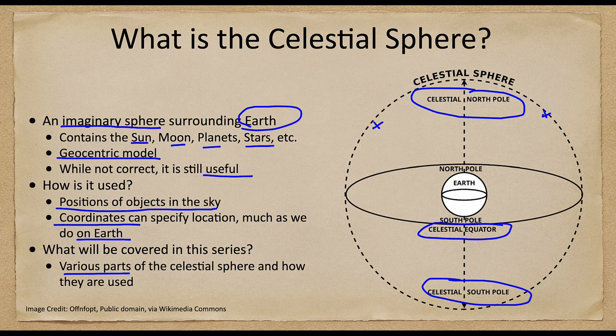We use a latitude that is how far you are above or below Earth's equator, and there's a similar coordinate called declination on the sky that measures position as north or south of the celestial equator. We will talk about those and other different coordinate systems and other parts of the celestial sphere as we go through this series over the next couple of months.